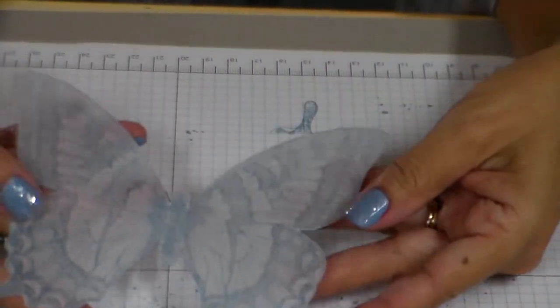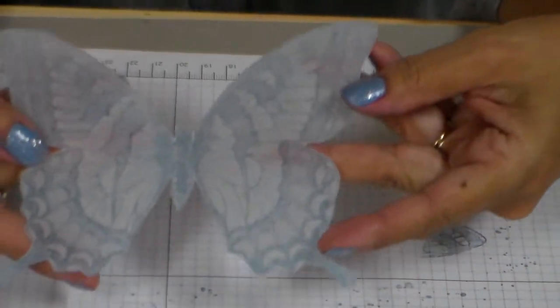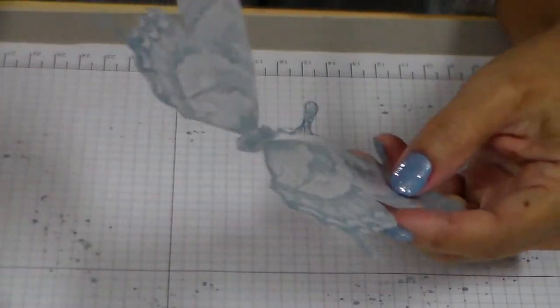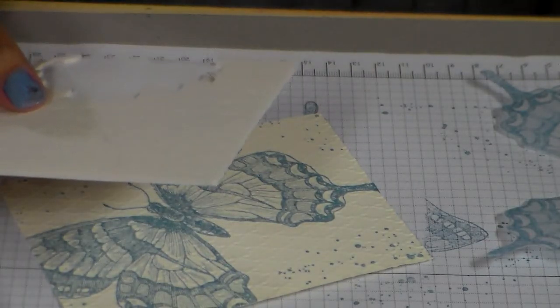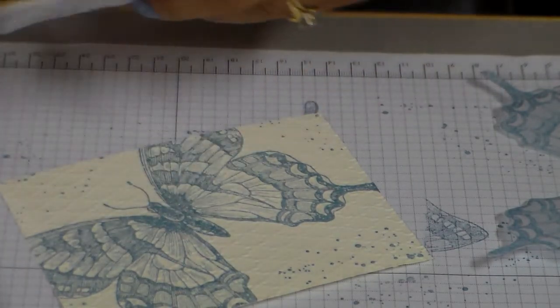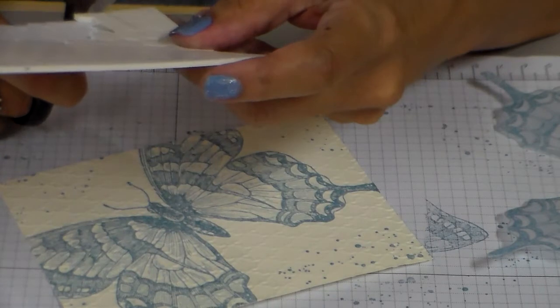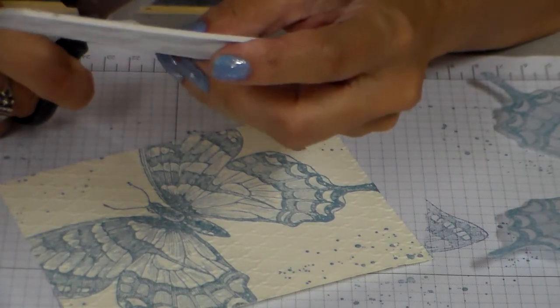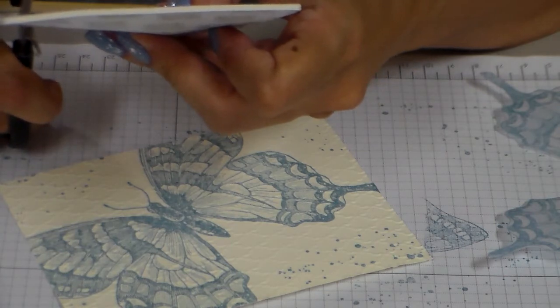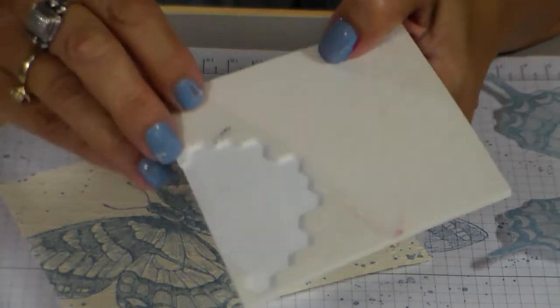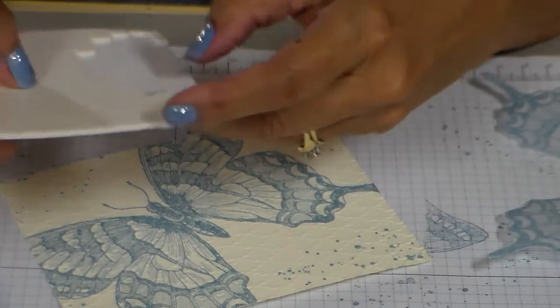Here is my butterfly stamped on vellum, that is gorgeous. Now what I do is I take some dimensionals and a pair of scissors here and I cut off the long little pieces that you will find on the edge of your dimensionals and peel those off.